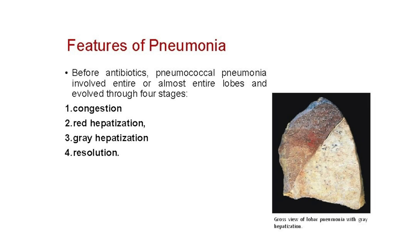Lobar pneumonia mainly affects the lower lobes of the lungs and can be divided into a series of stages: the stage of congestion, red hepatisation, grey hepatisation, and lastly the healing stage or resolution.